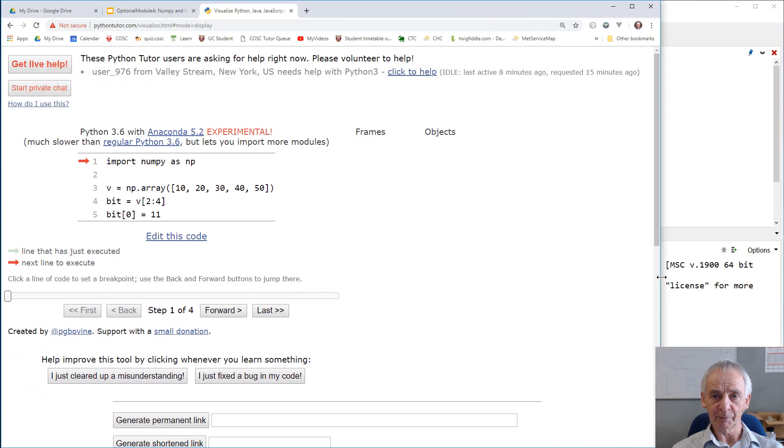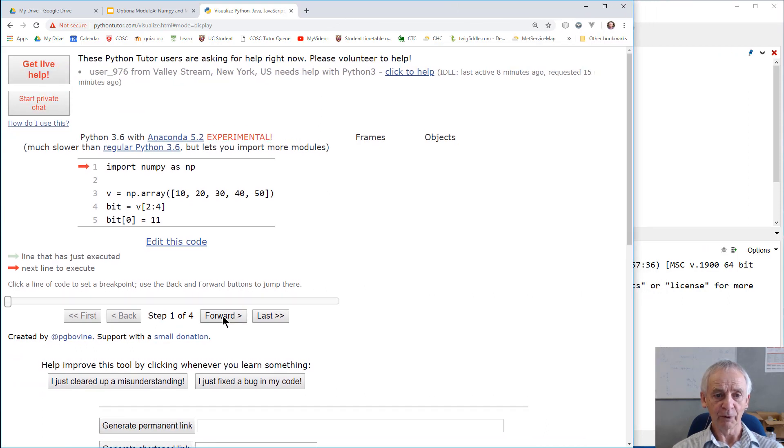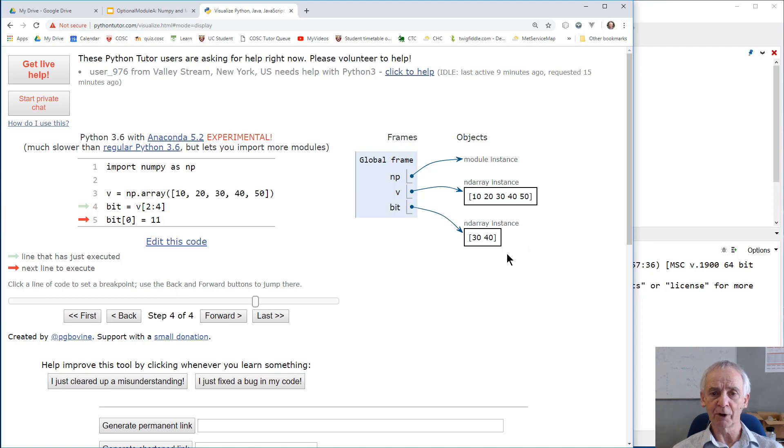So I'm about to start. I'm going to make my frame a little larger so you can see what happens. We import NumPy. We then have an empty global frame, as it's called, but we have a reference to the NumPy module. I'm going to assign to the vector. I have one there. There it is. V is an ND array instance, a one-dimensional array in this case. I'm now going to take my slice. The result probably isn't surprising, but it tells a little bit of a lie. There's my bit. I'm about to assign to bit 0. That's that element there. I'm going to set it to 11. Watch carefully what happens. Did you see that this array changed as well?